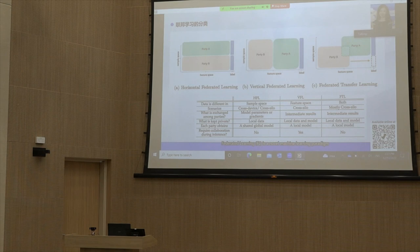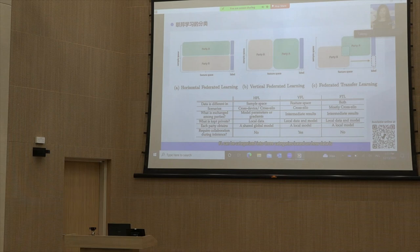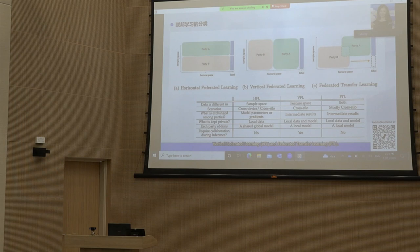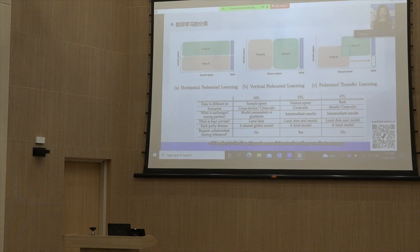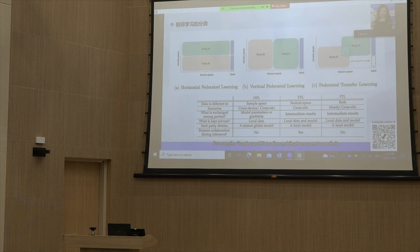VFL is a normal machine learning paradigm where multiple parties collaborate and build machine learning models without centralizing their data. VFL can be categorized into three categories based on how data is partitioned in the sample and feature space: horizontal federated learning HFL, vertical federated learning VFL, and federated transfer learning FTL. HFL refers to the FL setting where participants share the same feature space while holding different samples. For example, Google uses HFL to allow mobile phone users to collaboratively train a next-word prediction model.